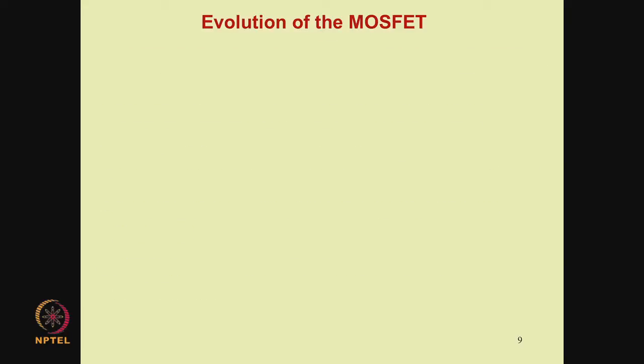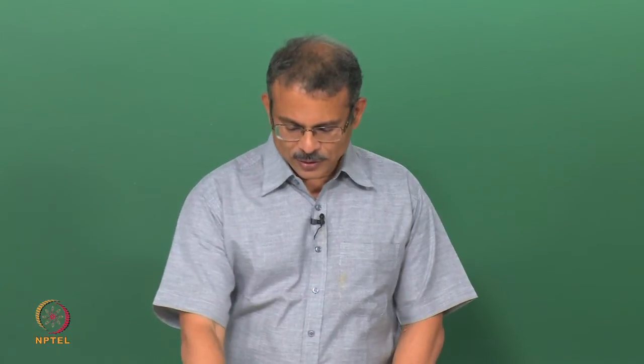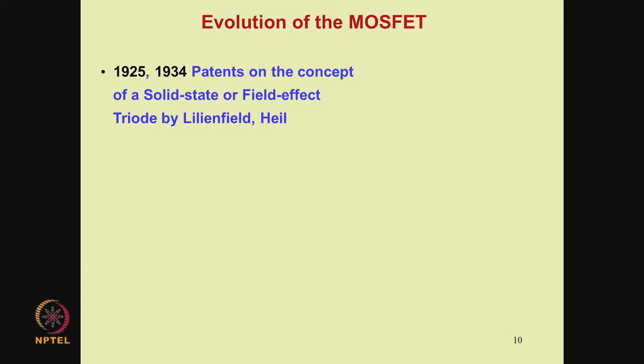Let us begin with an evolution of the MOSFET. The MOSFET has evolved over a few decades of time. In 1925 and then in 1934, patents on the concept of a solid-state or field-effect triode were filed by Lillienfield and Heil.